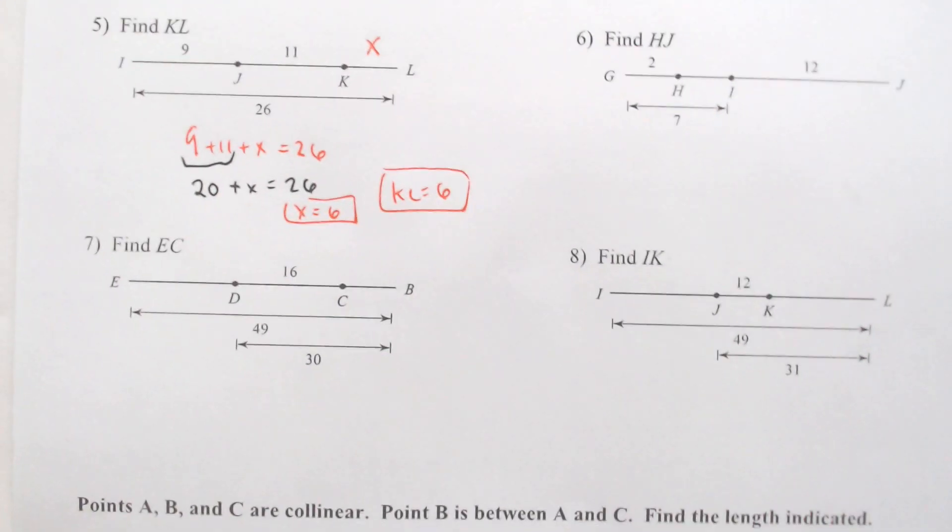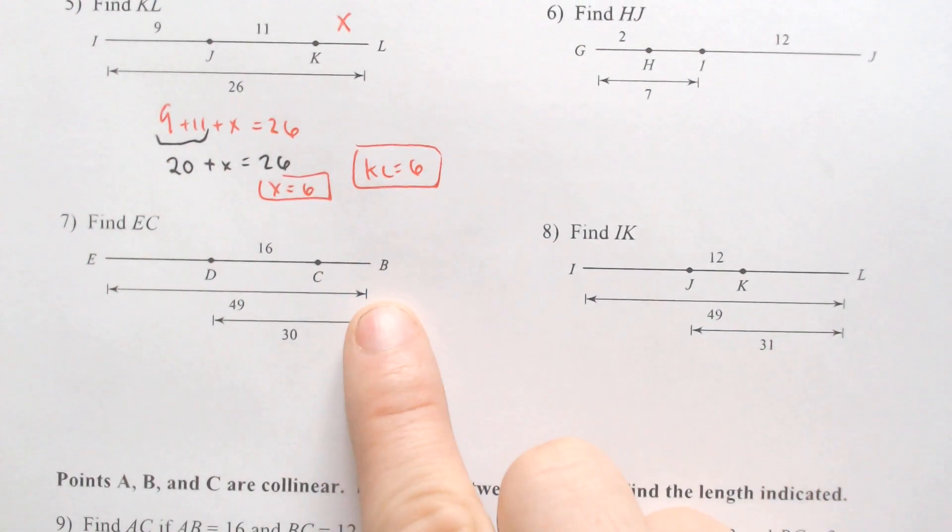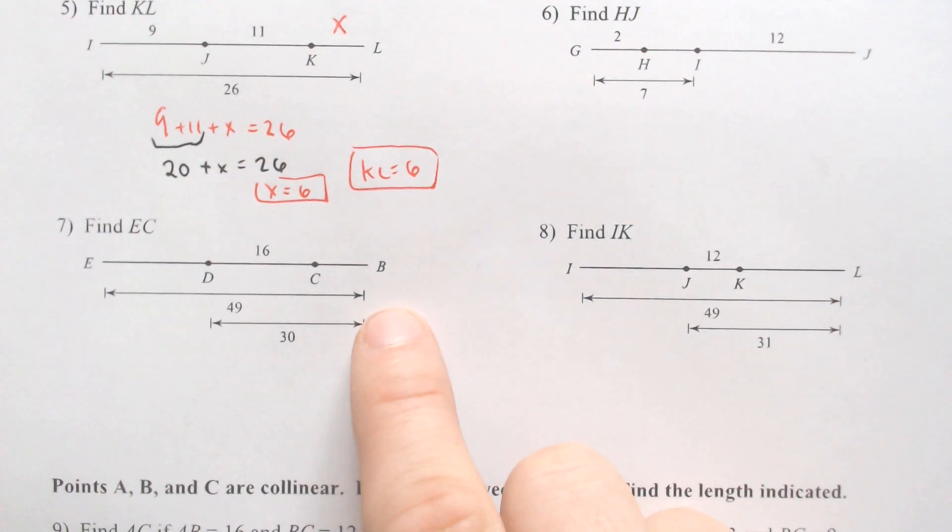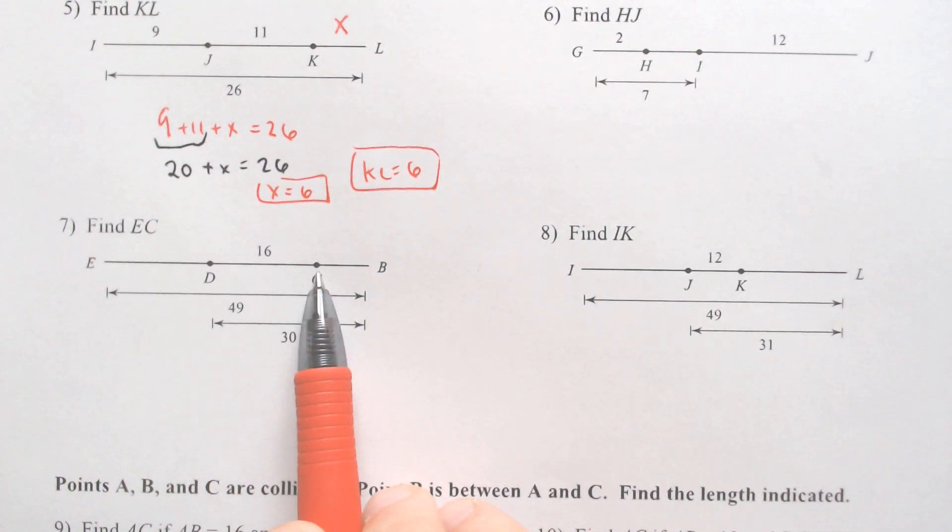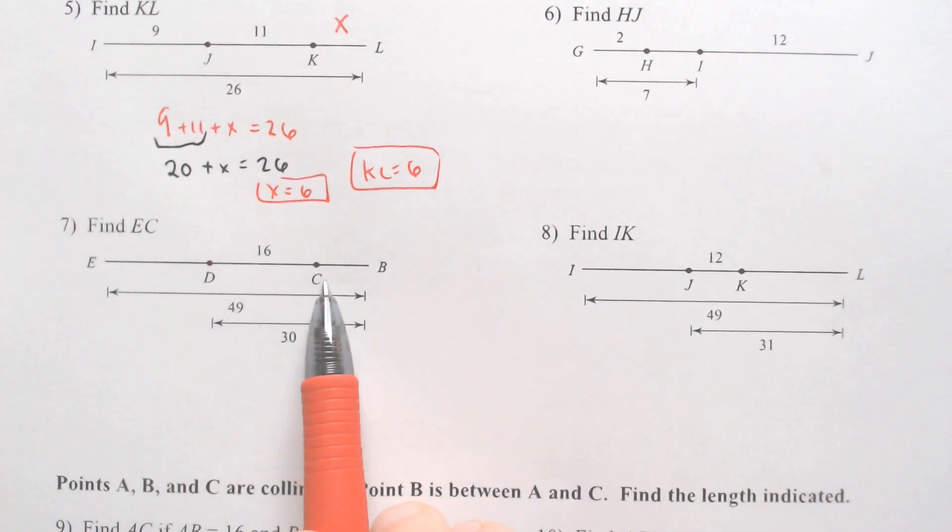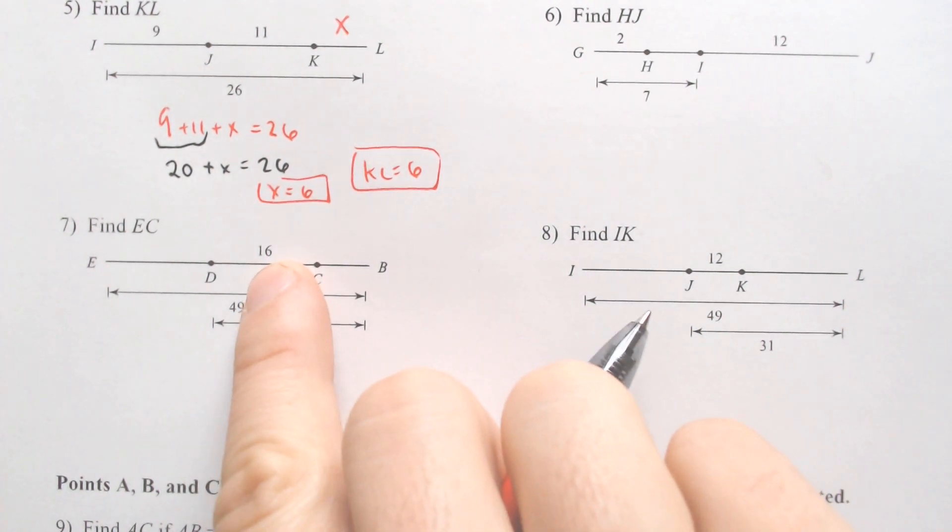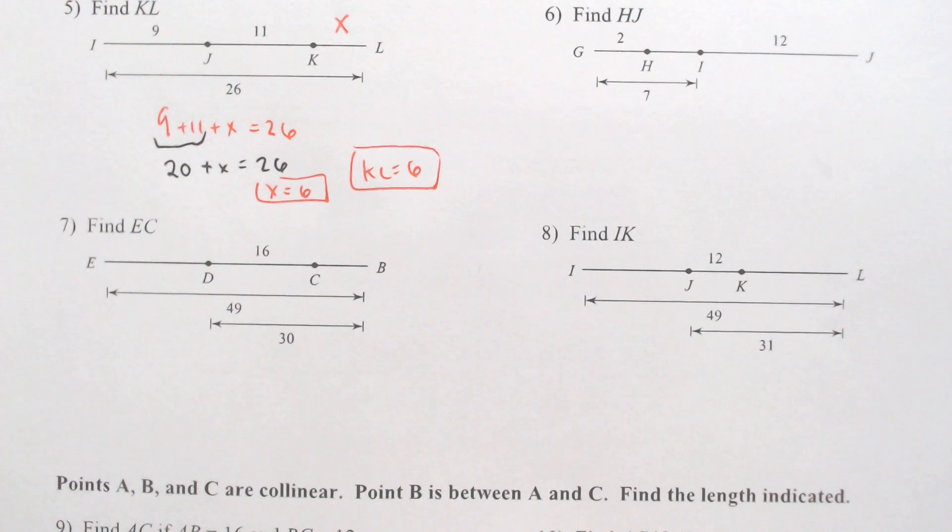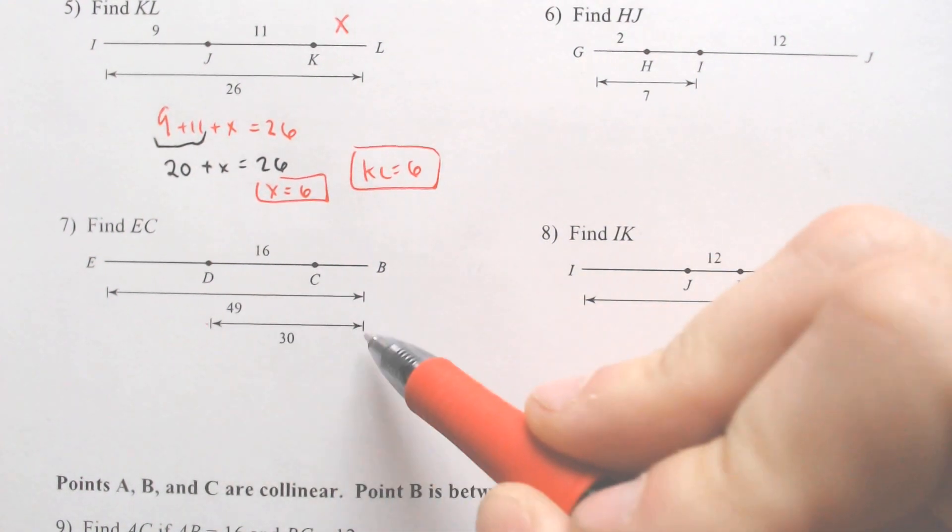Moving right along, we got our first one that I would consider to be a little bit funkier. We know that the entire way across is equal to 49. We also know that we have these three sections, the E to D, the D to C, and the C to B, all adding up to 49. We only got one of those things provided, the 16. In this case, I am also going to need this 30 down here.